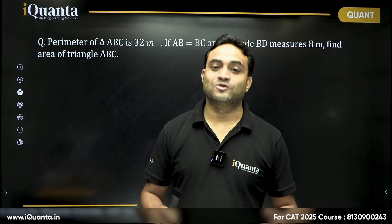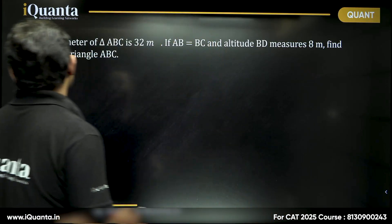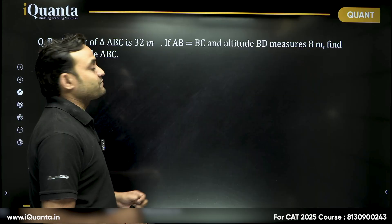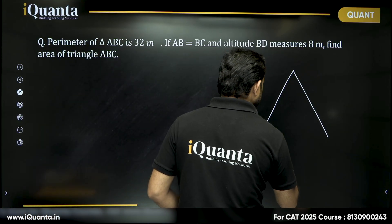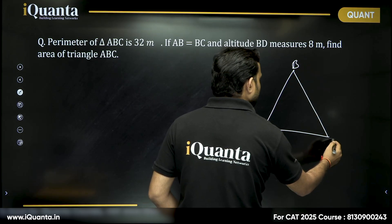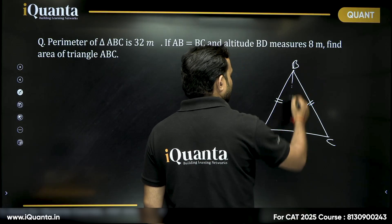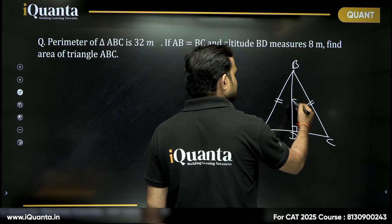So, a really good question of geometry, right? How do we solve it? It says the perimeter of triangle ABC is 32 meters. If AB is equal to BC, so this is an isosceles triangle where AB is equal to BC and the altitude BD measures 8 meters.